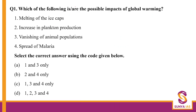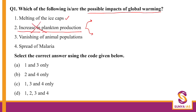Question number one: possible impacts of global warming. Melting of ice caps — this is very obvious. Increase in plankton production — you have phytoplanktons and zooplanktons. Now, because of global warming the temperature is increasing and there is ocean acidification, so the population of these plankton species should decrease or decline. The population is not going to increase, so you can eliminate option 2.